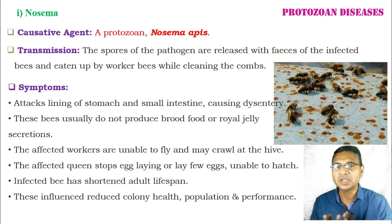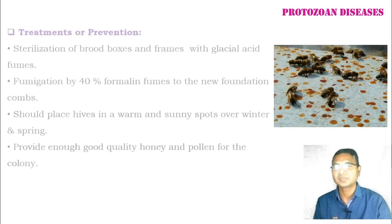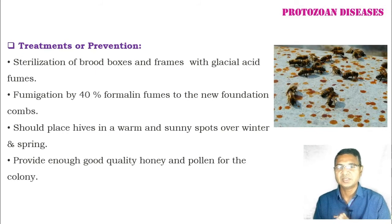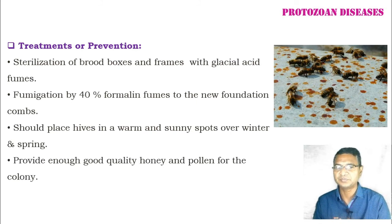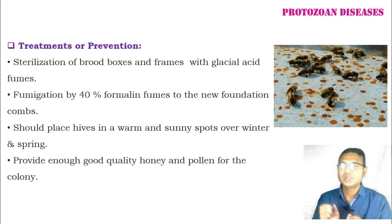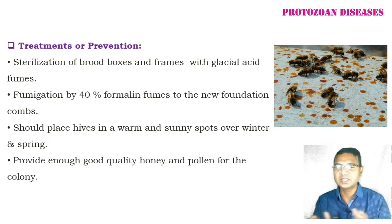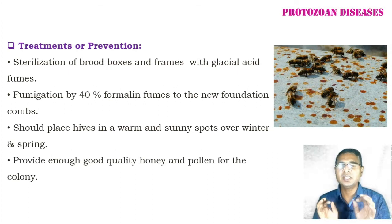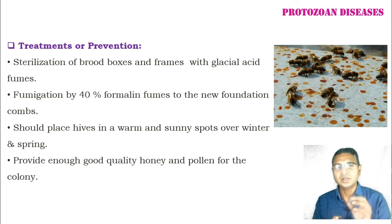For treatment or prevention of Nosema: sterilization of brood boxes and frames with glacial acetic acid is very effective. Fumigation with 40% formalin fumes to new foundation combs is also effective. The colony should be placed in warm and sunny spots during winter and spring, and provided with enough good-quality honey and pollen during dearth or unfavorable conditions.